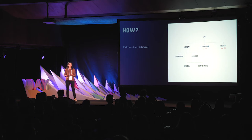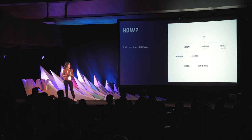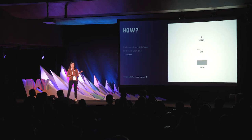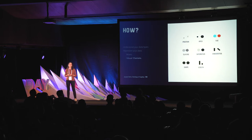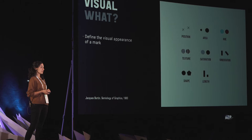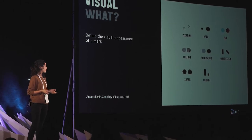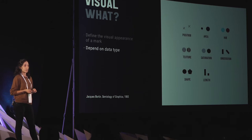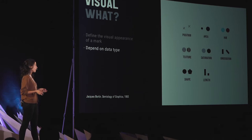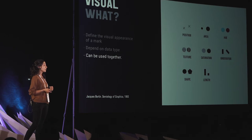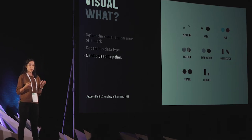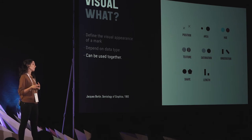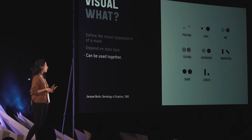Then, having our dataset and data types known, we have to represent them. For this reason, we make use of marks — which are points, lines, and areas — and then we use visual channels to represent the data more specifically. These visual channels give the visual appearance to the marks we choose. They can be used together to represent more than one variable in a mark, or to emphasize some variable in that mark.